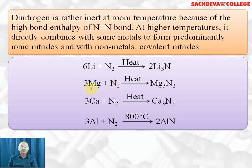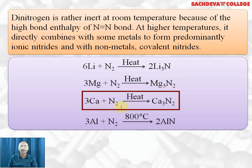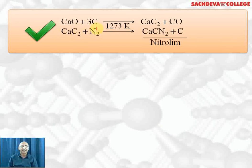Although nitrogen is a non-supporter of combustion, if you take burning lithium, magnesium, calcium, or aluminium wire in nitrogen, it keeps on burning because they react with nitrogen to form the corresponding nitride. Magnesium reacts with nitrogen to form magnesium nitride. Calcium reacts with nitrogen to form calcium nitride. Aluminium reacts with nitrogen at 800°C to form aluminium nitride.